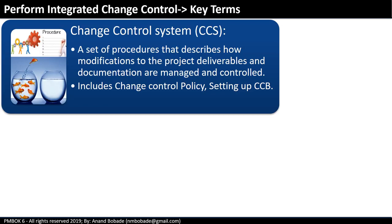What is the change control system? It is a set of procedures that describe how changes to project deliverables and documentation are managed and controlled. We went through a step-by-step procedure from initiation of a change request, through review, approval, and implementation. This procedure may include how to set up the CCB, the policies around it, who has approval authorities, what levels of authority exist, and so on.